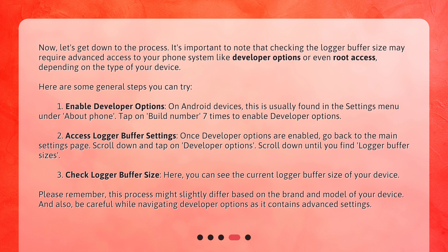Step 1: Enable developer options. On Android devices, this is usually found in the settings menu under 'About Phone.' Tap on 'Build Number' seven times to enable developer options. Step 2: Access logger buffer settings. Once developer options are enabled, go back to the main settings page. Scroll down and tap on 'Developer Options,' then scroll down until you find 'Logger Buffer Sizes.'